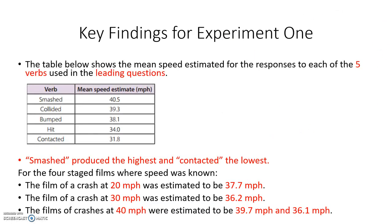Key findings for experiment one: the table shows the mean speed estimate for responses to each of the five verbs. It's important to remember the highest and the lowest — smashed produced 40.5 mph (noted as 40.8 in some textbooks) and contacted produced 31.8 miles per hour. For the four staged films where speed was known: a crash at 20 mph was estimated at 37.7 mph, at 30 mph estimated at 36.2 mph, and crashes at 40 mph were estimated at 39.7 and 36.1 mph. People are quite poor at estimating vehicle speeds, particularly at lower speeds.